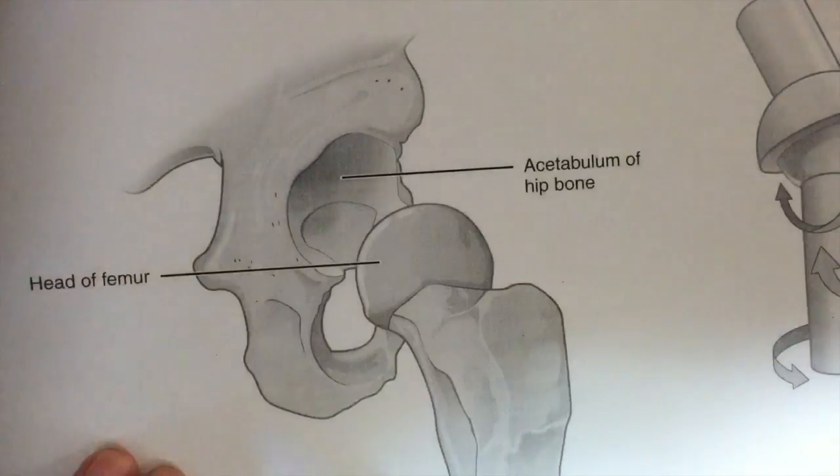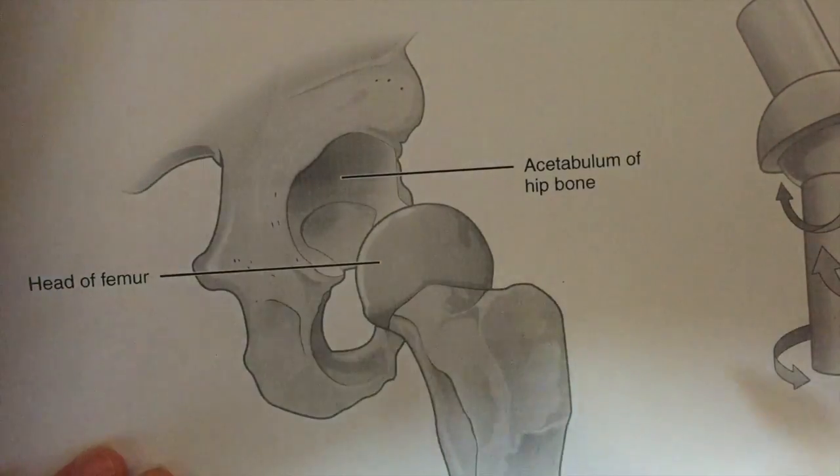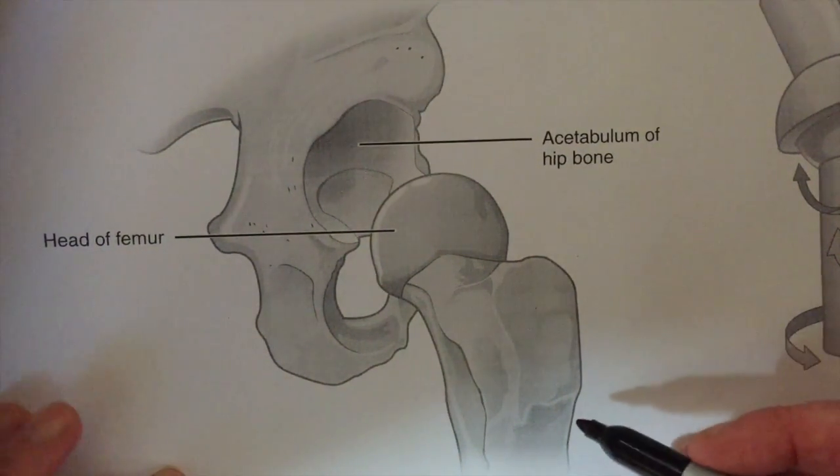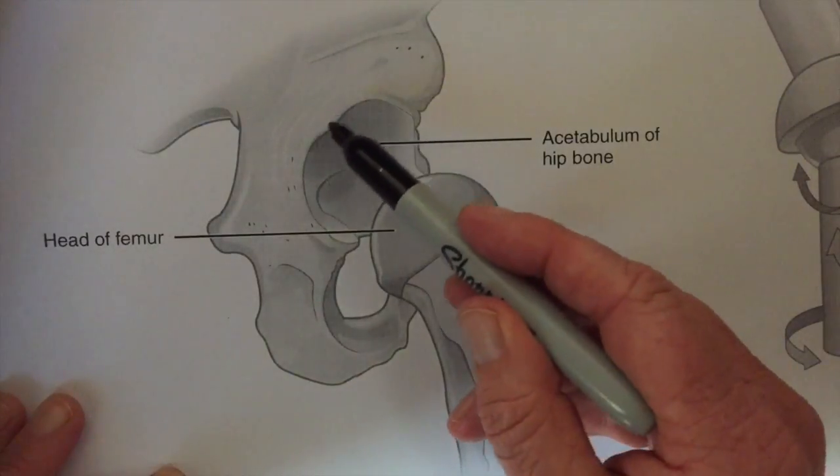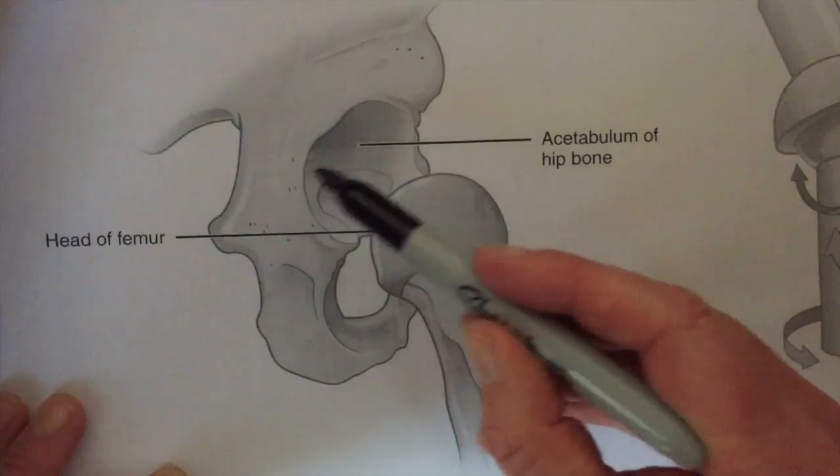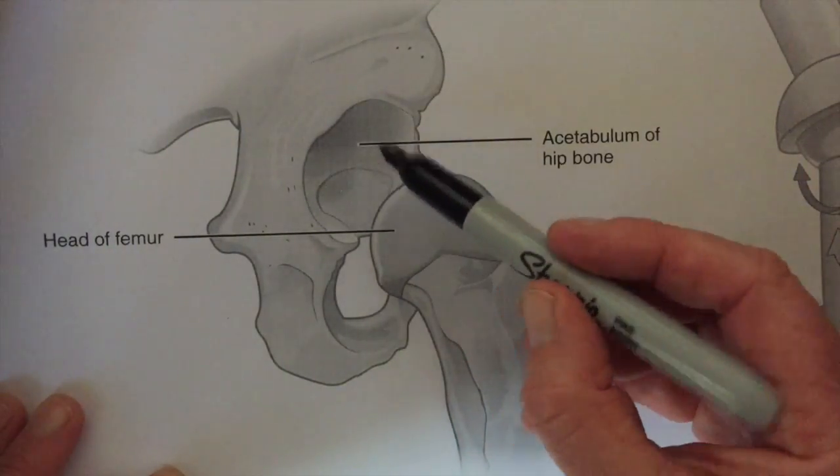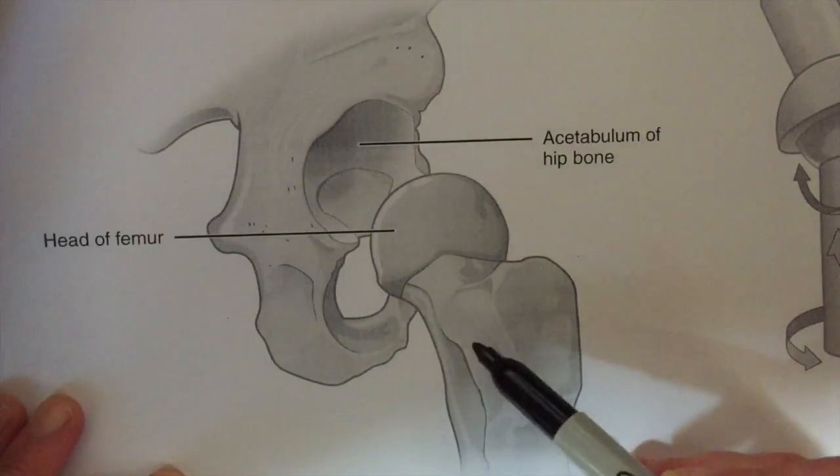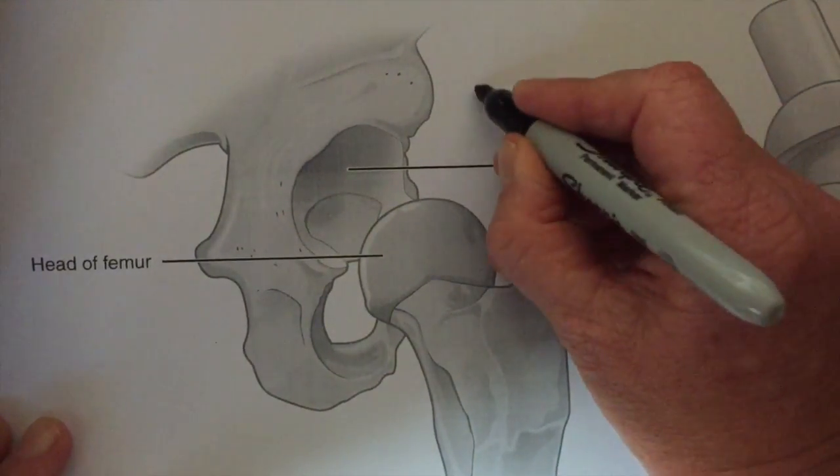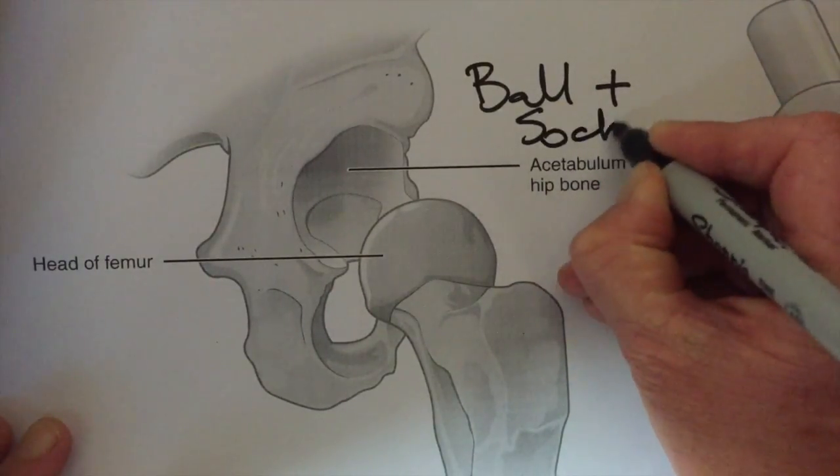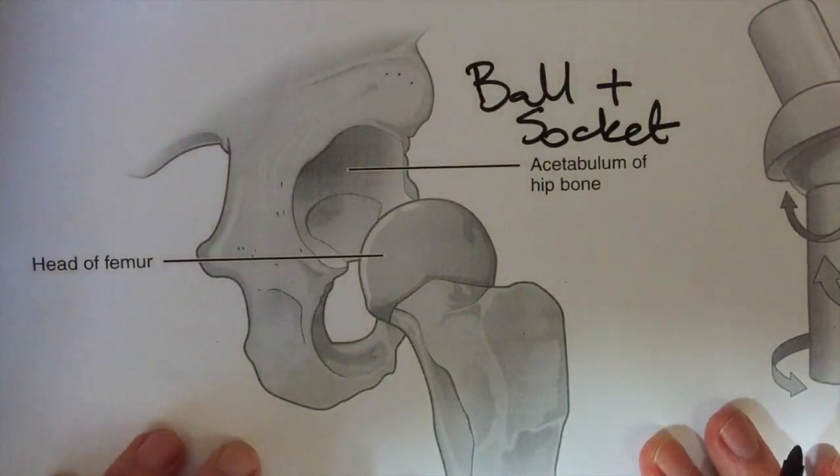This is a ball and socket joint, that's the hip joint. This is the hip or the acetabulum, so that's the socket, and this is the ball on top of the femur, a bone in the body.